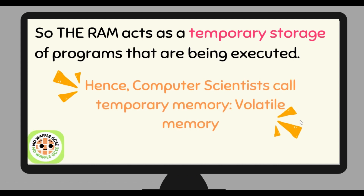The RAM acts as temporary storage of programs that are currently being executed. So if your computer is on right now, all of the windows, screens, and applications you're using are being stored in the RAM. But once you turn your computer off, since you're not using those programs, they will no longer be stored in the RAM. Hence, computer scientists call this type of temporary memory volatile memory.